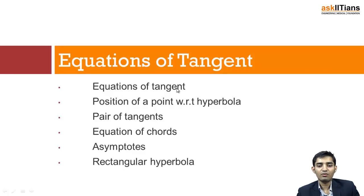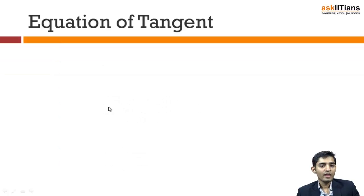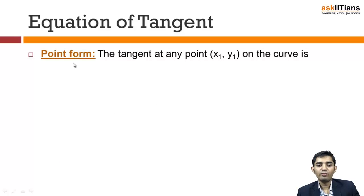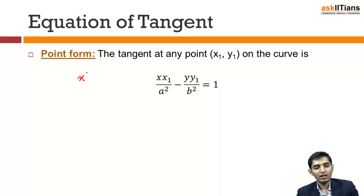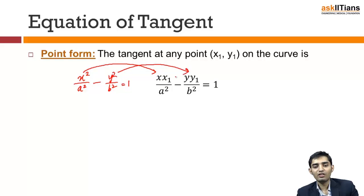Let us start with the first part — equation of tangents in various forms. The first form is point form. If x1 comma y1 is a point lying on the curve and I want to write down the equation of tangent at this point, the equation of tangent will be given by xx1 over a-squared minus yy1 over b-squared equal to 1, where my curve is a hyperbolic curve. The standard equation of hyperbola is given, and here I am replacing x-squared by xx1 and y-squared by yy1.